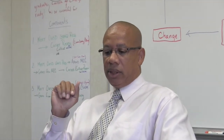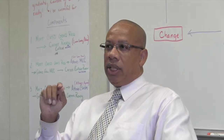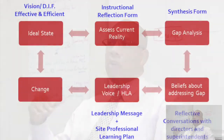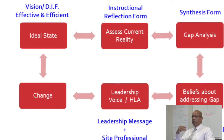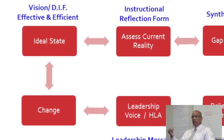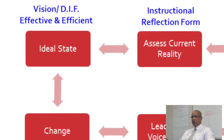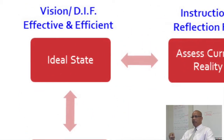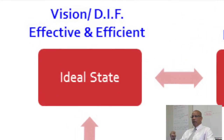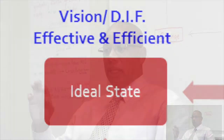So let's take, for instance, the ideal state. Think of the ideal state as where we want to get to. Think of our vision — Dwayne Coleman's personal vision. He's talked a lot about effective and efficient. So let's think about that as our ideal state. That's what we want to get to.